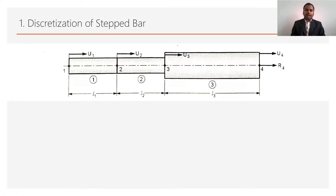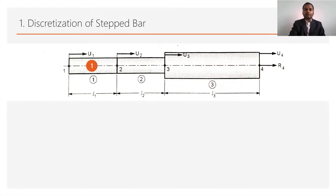The second condition is to check where the force is applied in the body. In this numerical, the force is applied at the center of the first cross section, so it is necessary to divide that cross section at that force location as well. Therefore, the first cross section will be divided into 2 parts: element number 1 and element number 2. Element number 1 has node numbers 1 and 2, and element number 2 has node numbers 2 and 3.